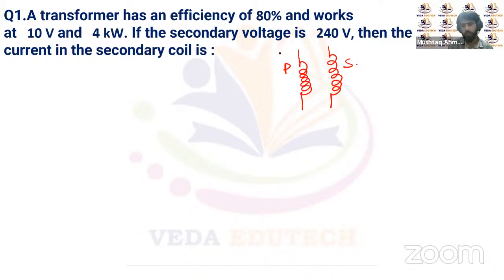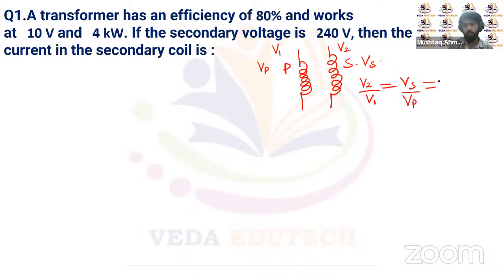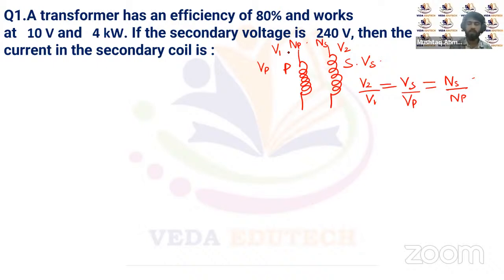Let V1 be the voltage across the primary coil and V2 the voltage across the secondary coil. Then V2/V1 equals the number of turns in secondary divided by the number of turns in the primary coil. For an ideal transformer, whatever input power is supplied by the primary, the same will be the output across the secondary coil.